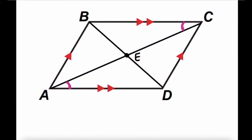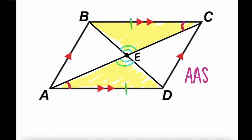What else do we know? Because this is a parallelogram, opposite sides are congruent — which means the length of BC is congruent to the length of AD. Also, if you pay close attention, you'll see a pair of vertical angles: angle BEC and angle DEA are congruent because they are vertical angles. So now we can make a conclusion about triangle BCE and triangle DAE — these two triangles are congruent to each other by angle-angle-side (AAS).